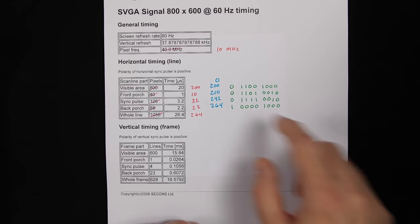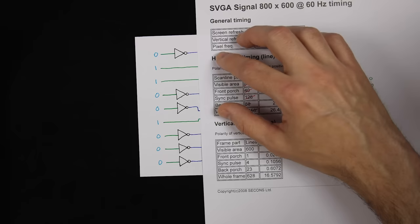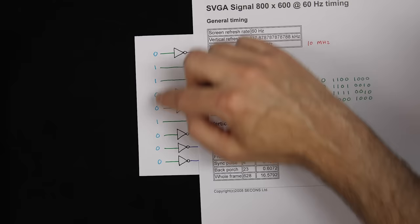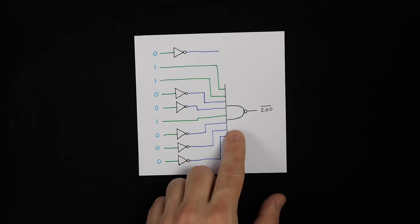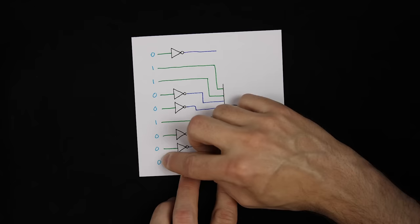We can invert all the bits that are supposed to be zeros, and not invert the bits that are ones. Then all inputs will be ones when we reach 200. We can feed all of that into a NAND gate, whose output will go low only when all inputs are high — which only happens when the counter is at 200. I only hooked up eight of the nine bits, because we can use the 74LS30 which is an eight-input NAND gate.